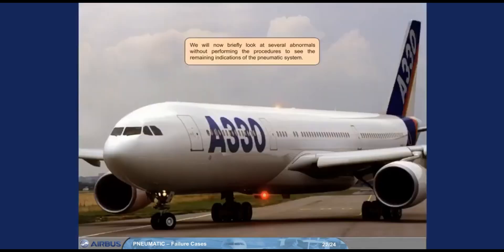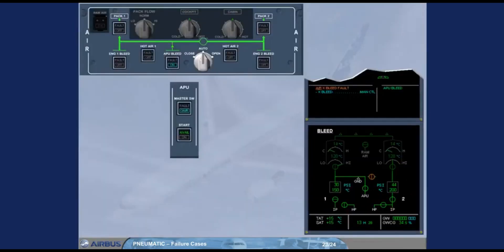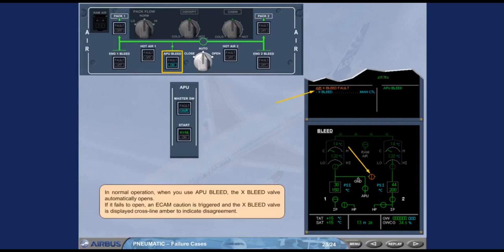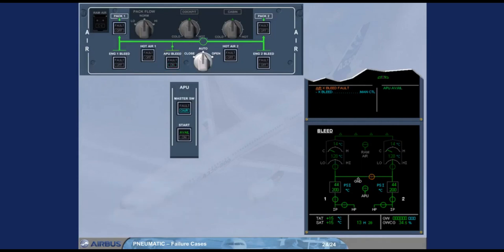We will now briefly look at several abnormals without performing the procedures, to see the remaining indications of the pneumatic system. In normal operation, when you use APU bleed, the cross bleed valve automatically opens. If it fails to open, an ECAM caution is triggered and the cross bleed valve is displayed cross-line amber to indicate disagreement. Conversely, if the cross bleed valve fails to close in automatic mode, for example after the APU bleed has been switched off, it is displayed in-line amber accompanied by an ECAM caution.